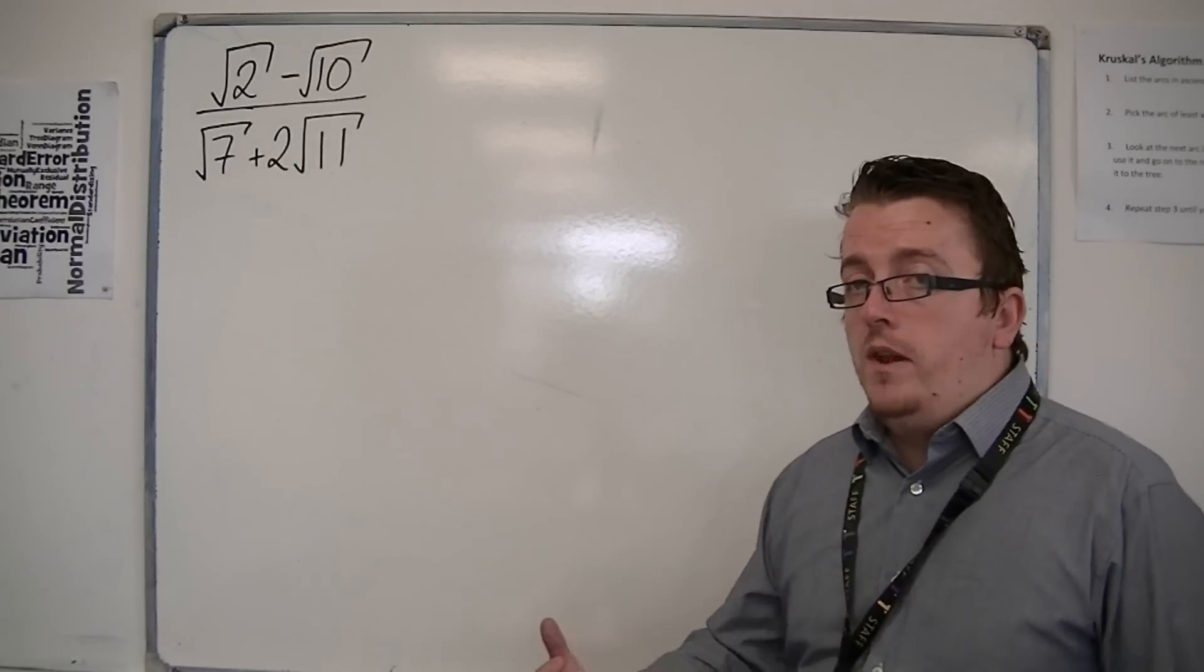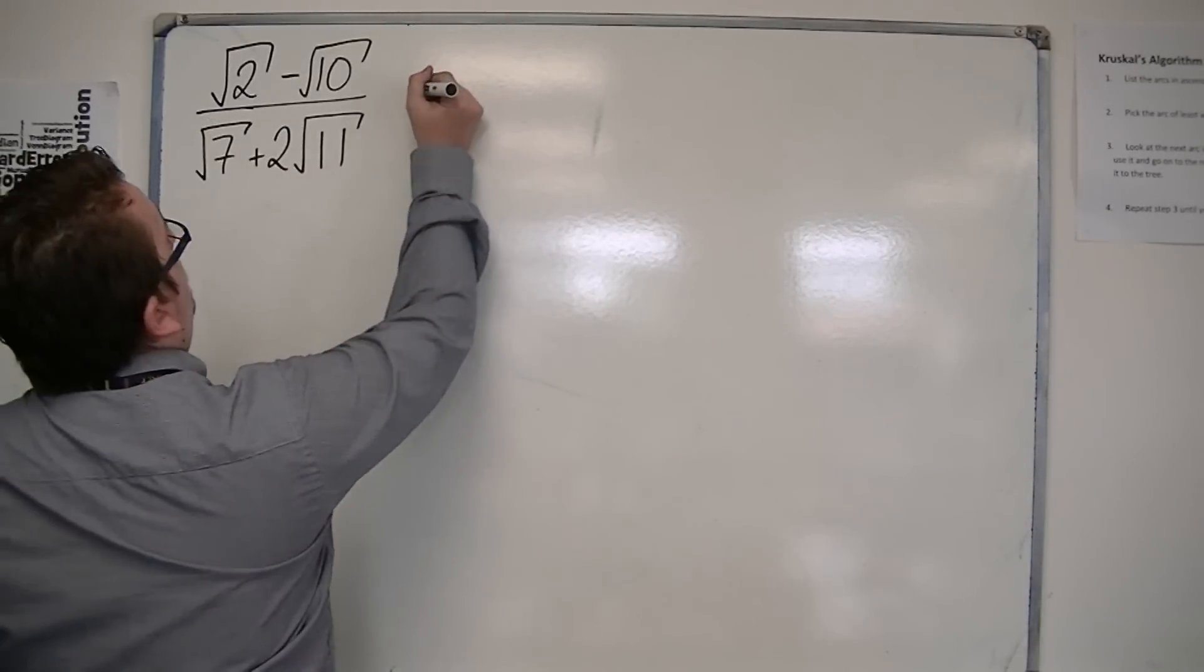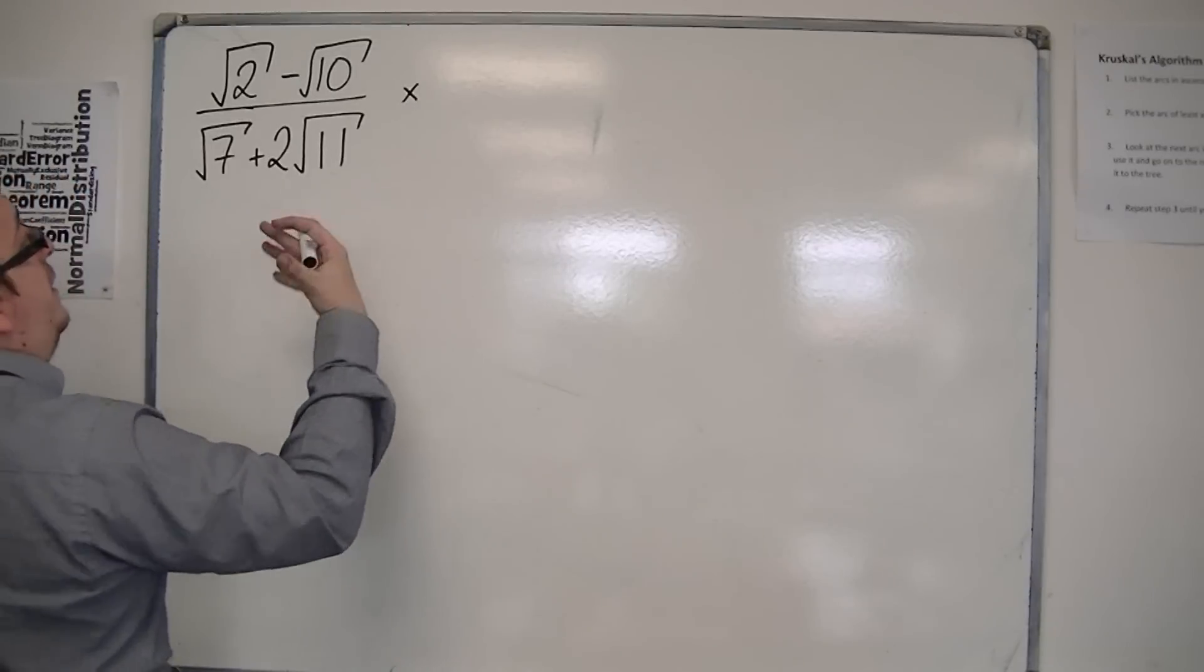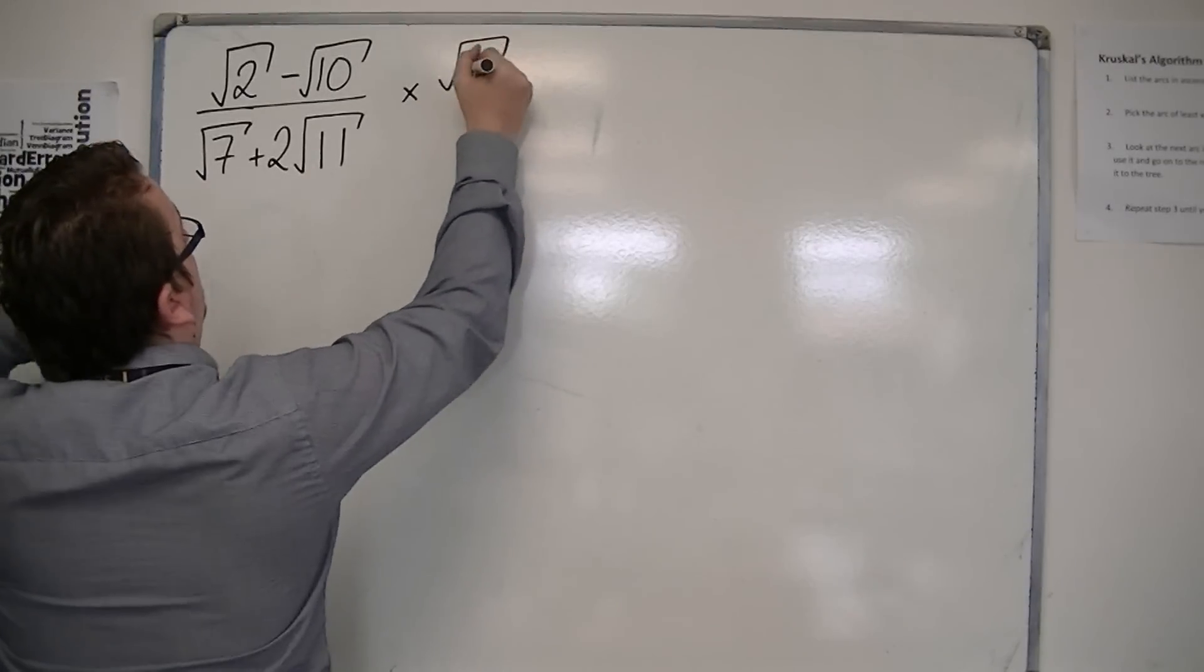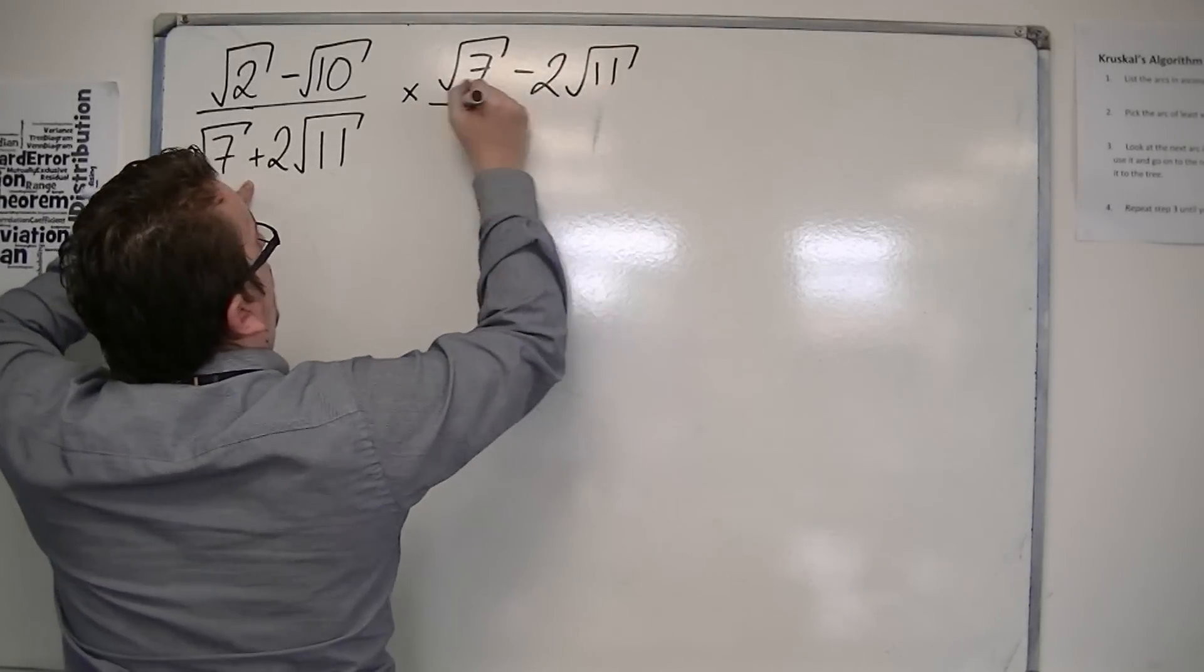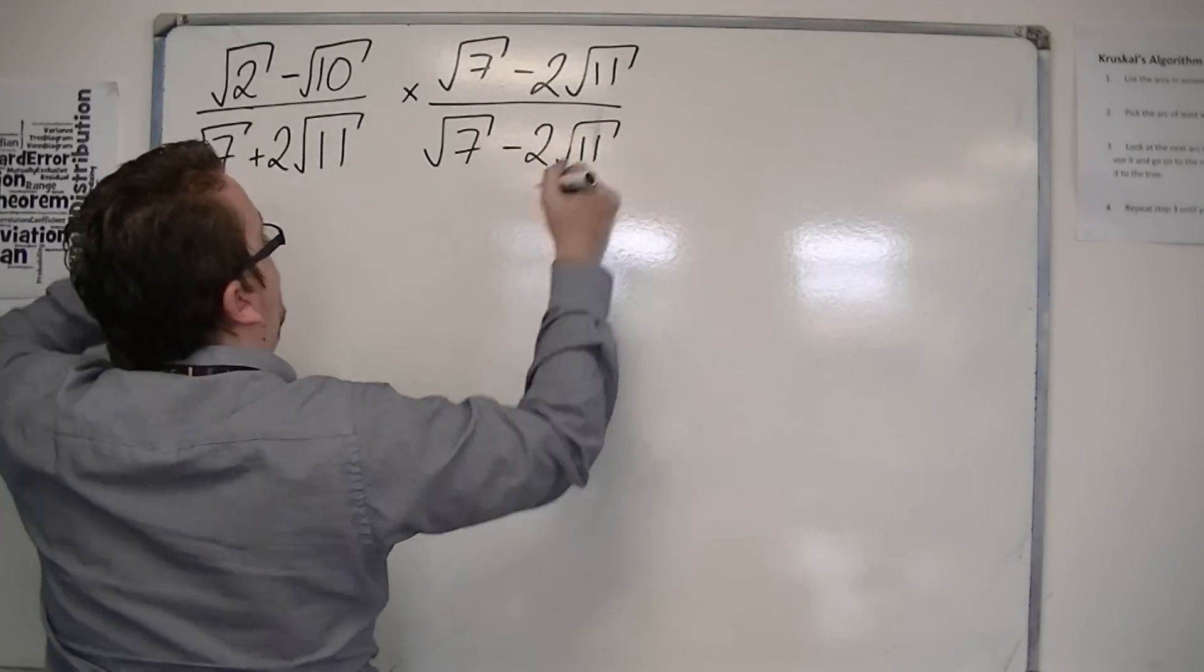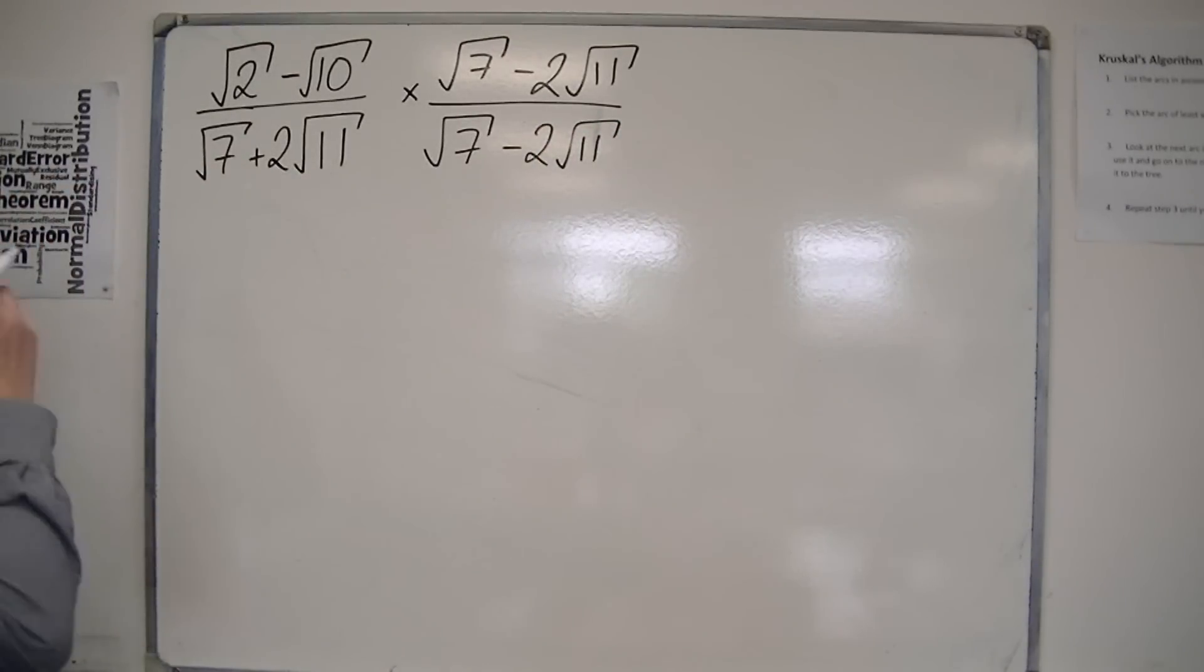We're still going to multiply by 1, and as you might already have guessed, we would multiply by the 1, and the 1 is going to look like root 7 minus 2 root 11 over root 7 minus 2 root 11. There's no real change there.